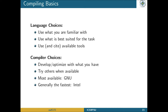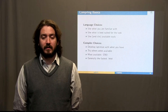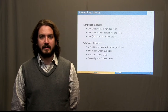For compiler choices, I always suggest developing and optimizing with what you have available, then trying other things when you're on a different system. If you have a minimal working example, you can test different optimizations and different compilers to see which one works best on the system you're running on. The most commonly available compiler is probably the GNU compiler suite, and generally the fastest is going to be the Intel compiler — especially on ACI, because we have Intel chips, and the Intel compiler is significantly faster than GNU.